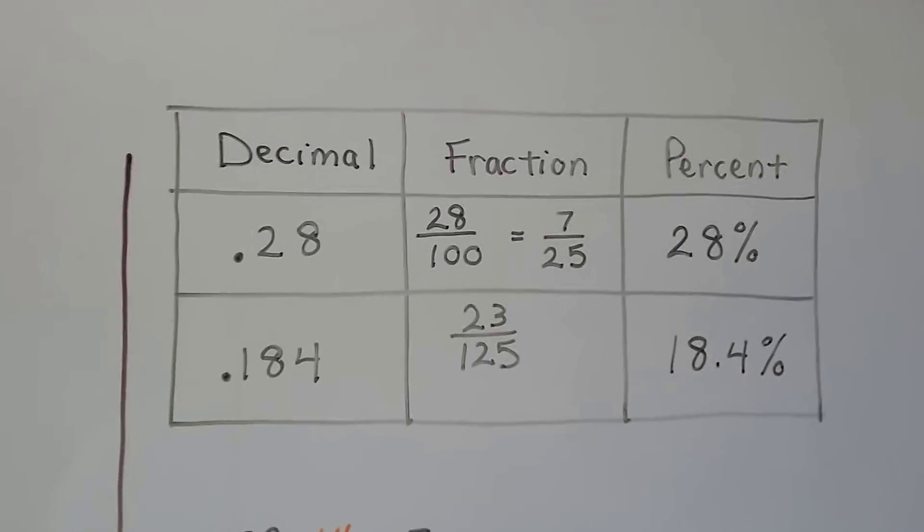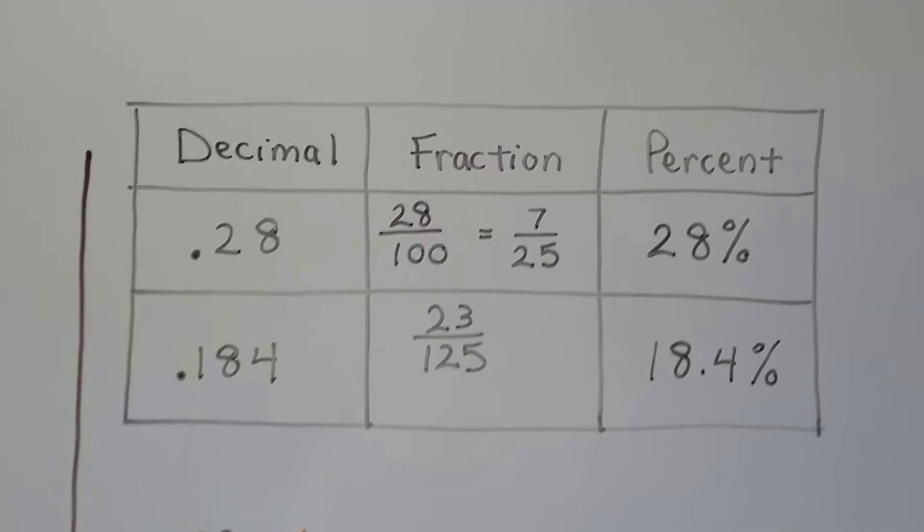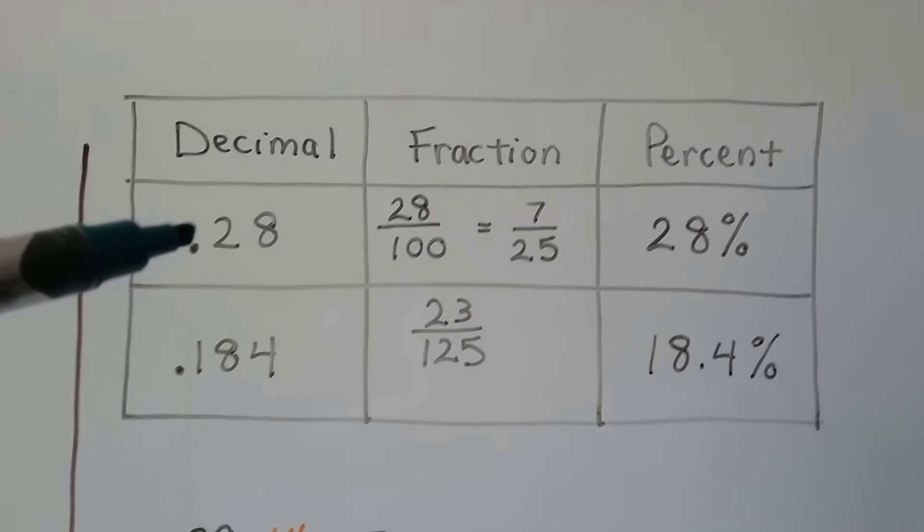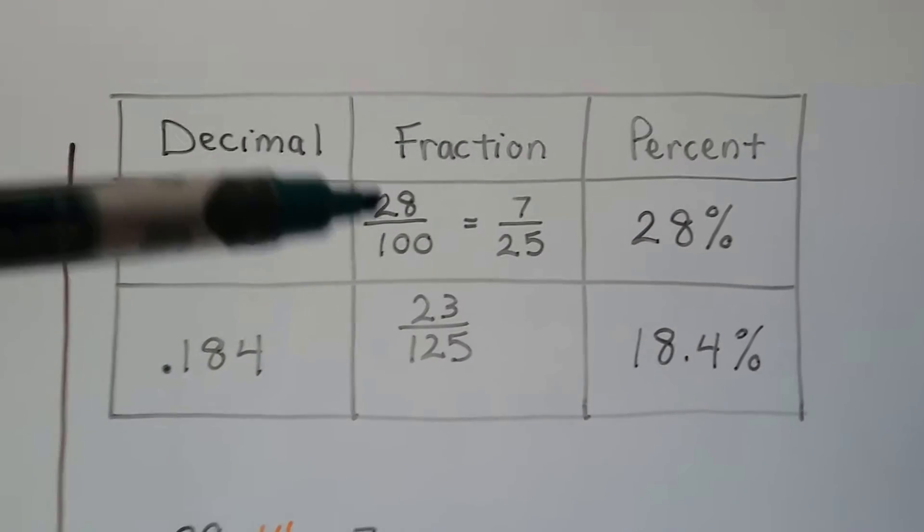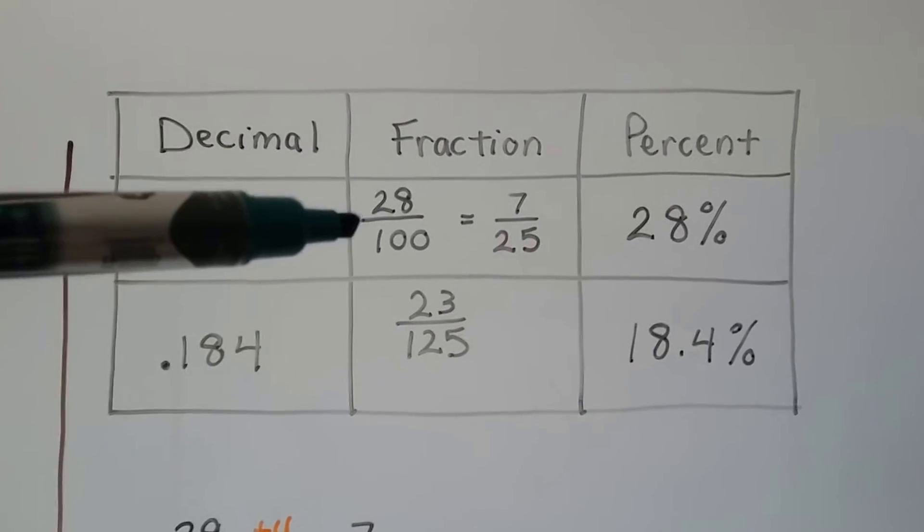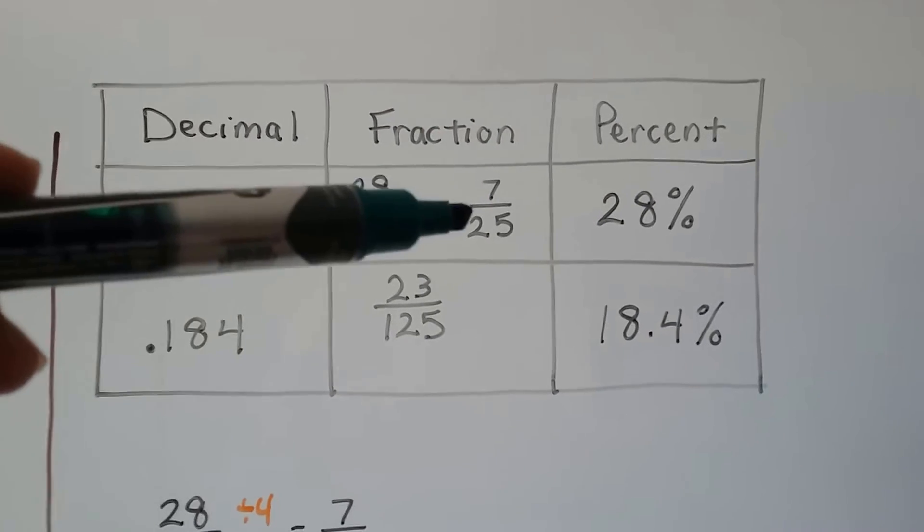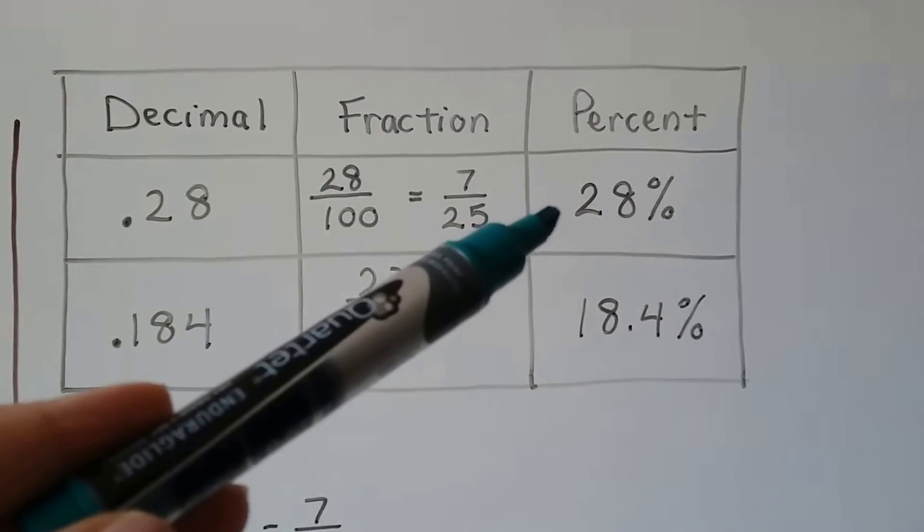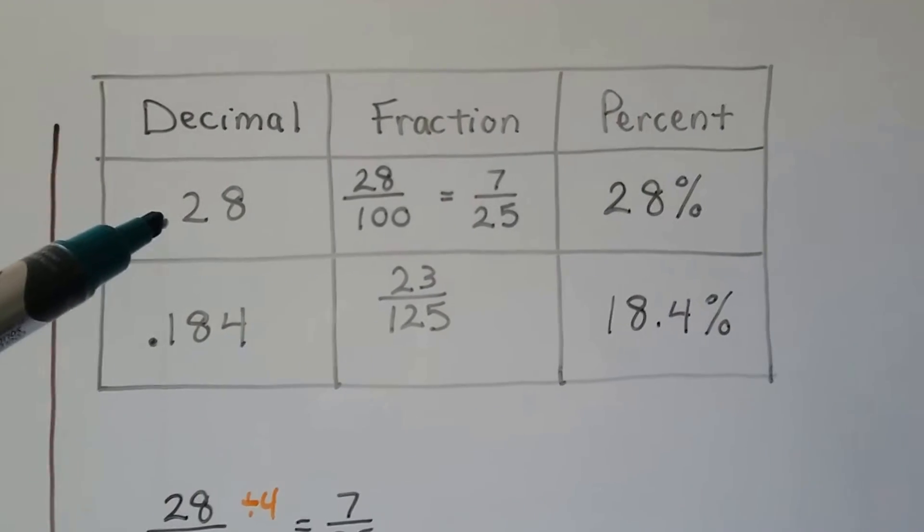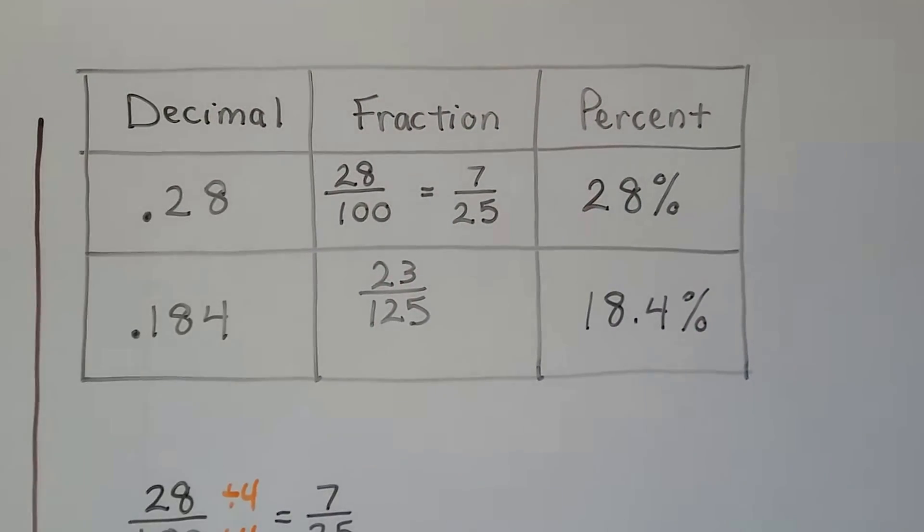If we want to look at a chart that has decimals, fractions, and percents, we have 0.28, which is 28 hundredths, so we can write it as a fraction as 28 hundredths, and we can simplify it to 7 twenty-fifths. It's also 28% because we just move this decimal point and put a percentage sign on.